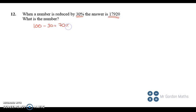So this is like 70% of a number. So we can say 70% of a number is equal to 17,920.